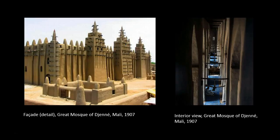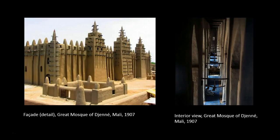Over the years, Djenné's inhabitants have withstood repeated attempts to change the character of their mosque and the annual festival — for instance, efforts to suppress music during the Crépissage, and offers by foreign Muslim investors to rebuild the mosque in concrete and tile its sand floor. The community has unrelentingly striven to maintain its cultural heritage. In 1988, these efforts led to the designation of the site and the entire town of Djenné as a World Heritage Site by UNESCO — the United Nations Educational, Scientific and Cultural Organization. That concludes African architecture; our next segment will look at African sculpture.